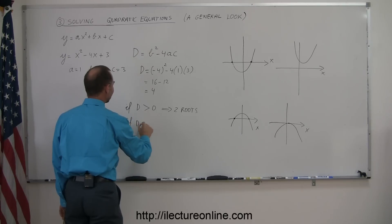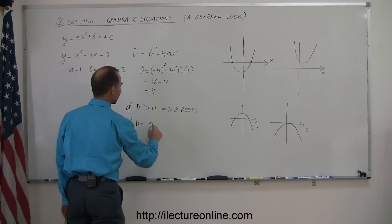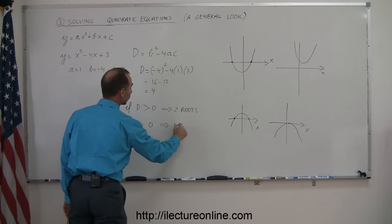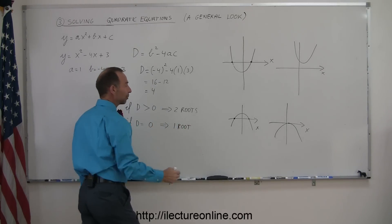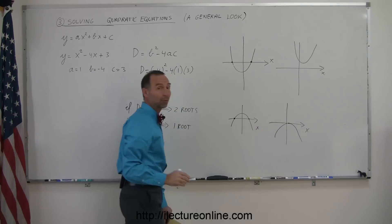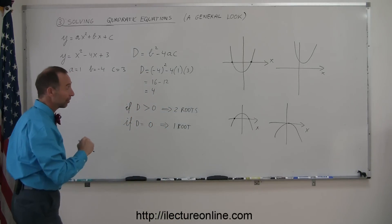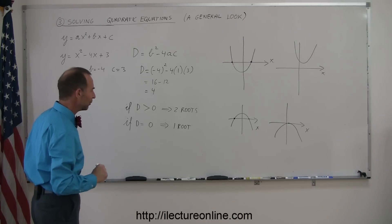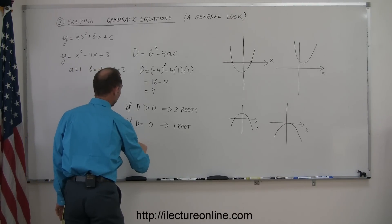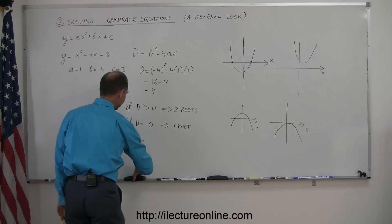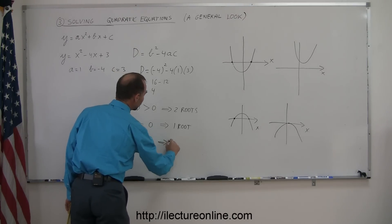If the determinant is equal to 0, then there's only one root. So then you would have something that looks perhaps like this, where it just touches the x-axis but that doesn't actually cross it, so there's only one root. And if the determinant is less than 0, then there's no roots.